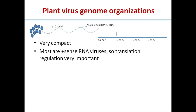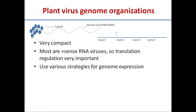Most plant virus genomes have single-stranded RNA that works as mRNA, meaning they are ready to be translated. Translation regulation is very important because transcription has no scope — the virus genome is already acting as mRNA, acting as a transcribed version of DNA. So any regulation required for genome-level expression is basically translational regulation. Viruses use a very good number of strategies for genome expression.